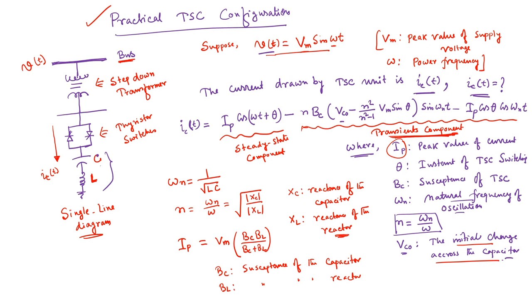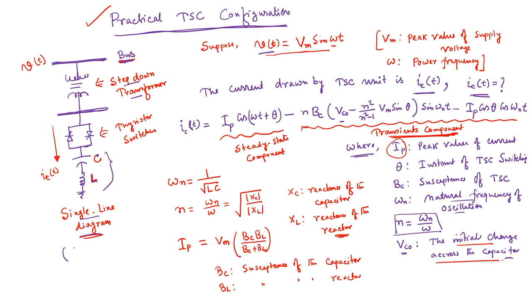Looking at the practical TSC configuration, it consists of a step-down transformer for stepping down the voltage from the transmission level to a much lower voltage at a particular bus. Then we have a bi-directional switch, a fixed capacitor, and a small reactor. The role of the reactor is primarily to restrict the current during switching and also to restrict the high di/dt value during switching. This is the single-phase configuration of the TSC.